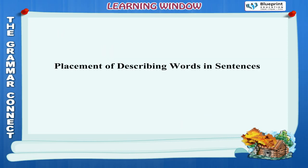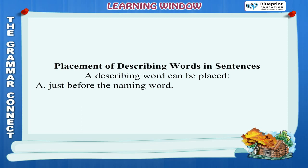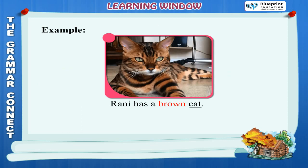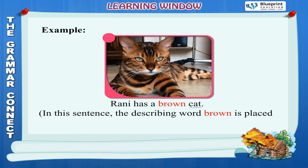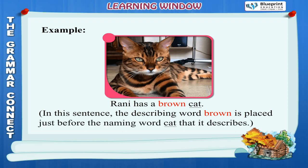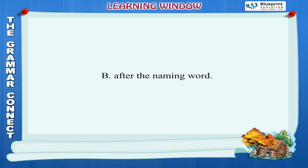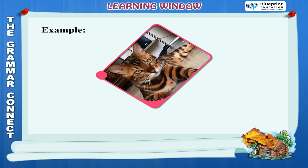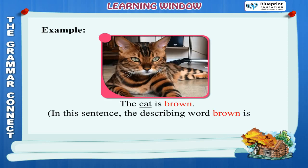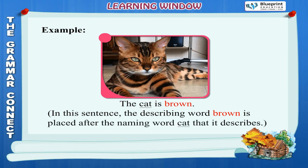Placement of describing words in sentences. A describing word can be placed (a) just before the naming word. Example: Rani has a brown cat. In this sentence, the describing word 'brown' is placed just before the naming word 'cat' that it describes. (b) After the naming word. Example: The cat is brown. In this sentence, the describing word 'brown' is placed after the naming word 'cat' that it describes.